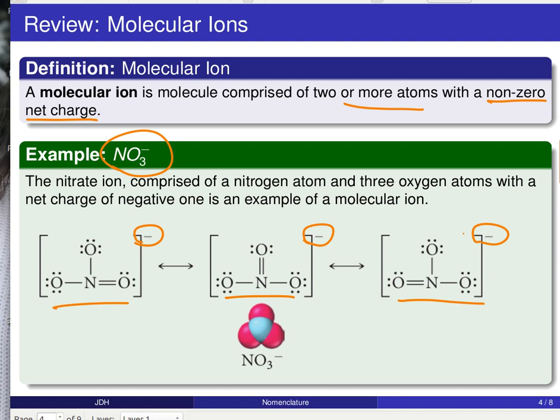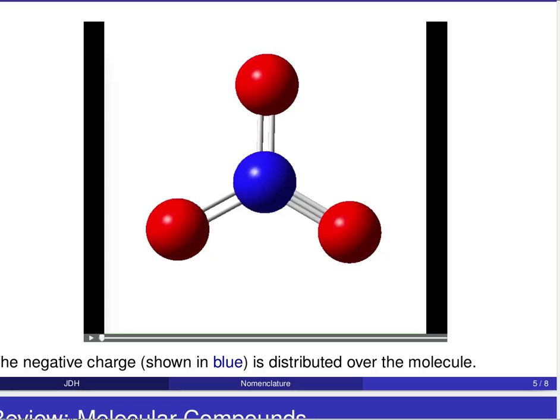So what I want us to do then is to take a look at what this molecule actually looks like in space. What does this NO3- molecule look like in three-dimensional space? How are these electrons, and in particular this negatively charged, the electron, this extra electron that's giving this negative charge, where is it located?